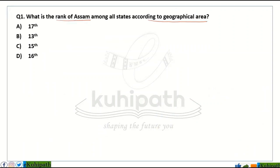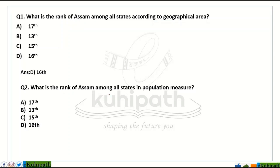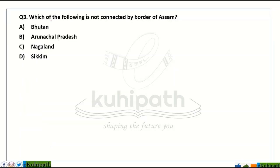Practice question: What is the rank of Assam among all states according to geographical area? Also, what is the rank of Assam among all states in terms of population? Which of the following is not connected by the border of Assam?